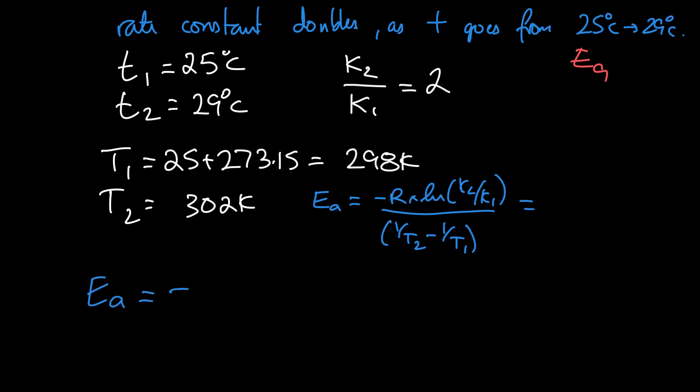My activation energy is minus the gas constant. So again, the gas constant we're going to use is 8.3145 joules per mole Kelvin. Because we want our activation energy to have units of joules per mole, we're going to use this one over the liter atmosphere one.